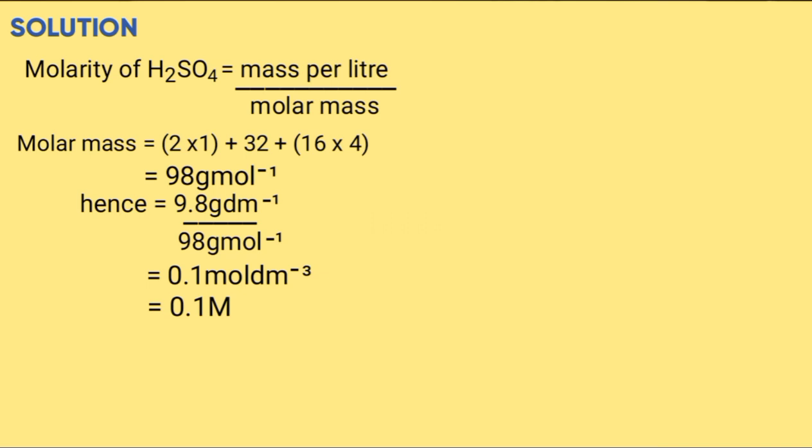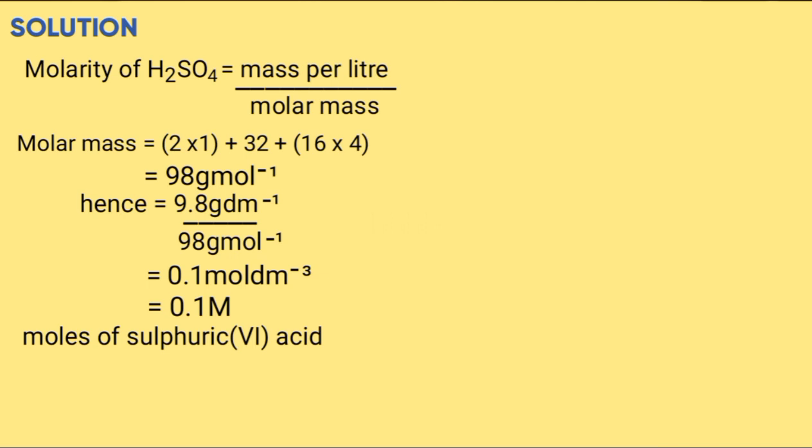Moles of sulfuric acid, we're going to use first principle method, which says 1000 cm³ contains 0.1 moles. 0.1 moles is obtained from molarity. What about 25 cm³? Cross multiply, 25 times 0.1 over 1000, which is 0.0025 moles.